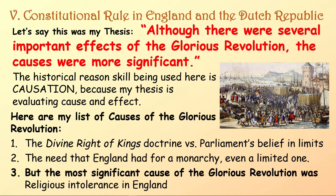Here are three causes of the Glorious Revolution. In my LEQ I'd really run two, discarding whichever worked least. Number one: the divine right of kings doctrine versus Parliament's belief in limits for monarchs. Number two: England's need for a monarchy, even if it's a limited one. Number three, the most significant: religious intolerance in England. The point of this presentation is to go into all of that and explain it more fully.